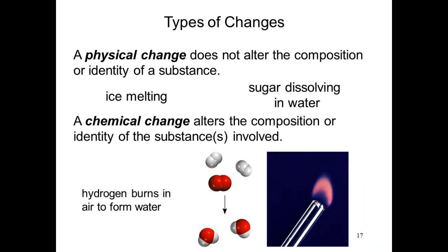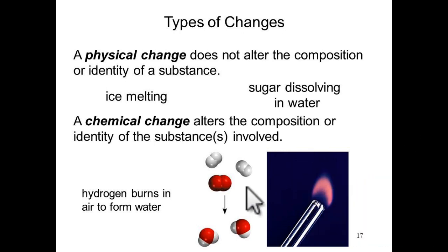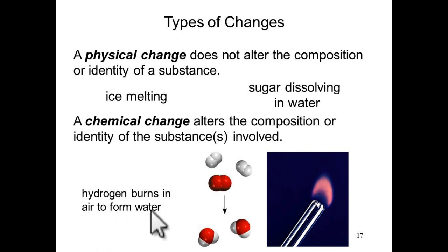When we talk about chemical reactions, chemical changes are where a reactant changes to a product. It means the reactant before the experiment and the product after the experiment are not the same substance anymore. A simple example: hydrogen burns in air to form water. Hydrogen is H₂ and air provides O₂. When they combine, they form H₂O — a new product that is not the same as before. Therefore, it is a chemical reaction.